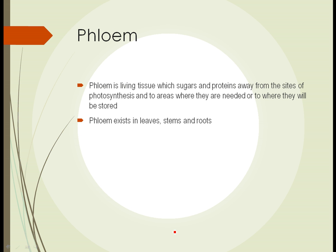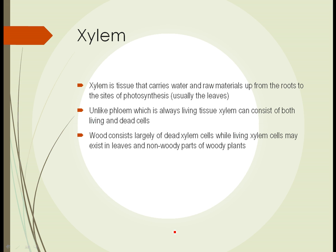Phloem consists of living tissues, which carry sugars and proteins away from the site of photosynthesis into areas where they're needed or are going to be stored, like tubers and roots. The phloem exists in leaves, stems, and roots — keep in mind, phloem is living tissue. Xylem carries water and raw materials up from the roots to the sites of photosynthesis. Unlike phloem, which is always living tissue, xylem can consist of both living and dead cells.